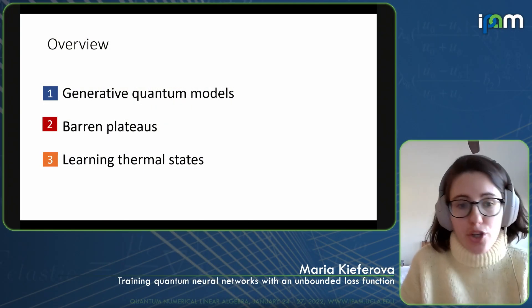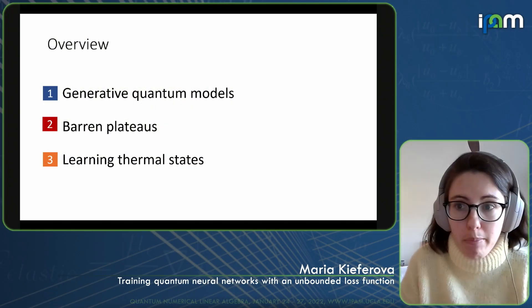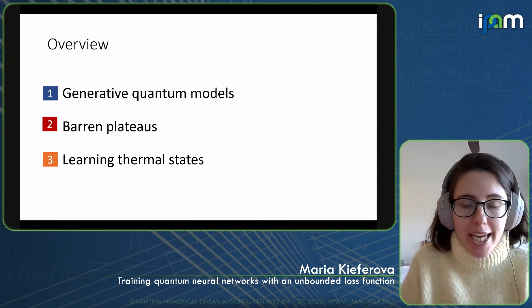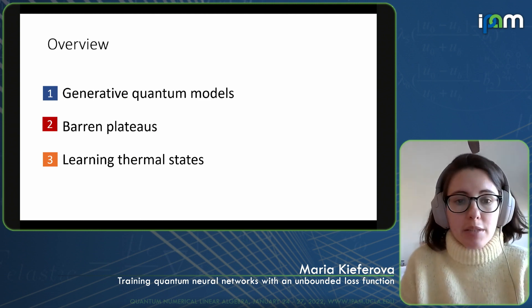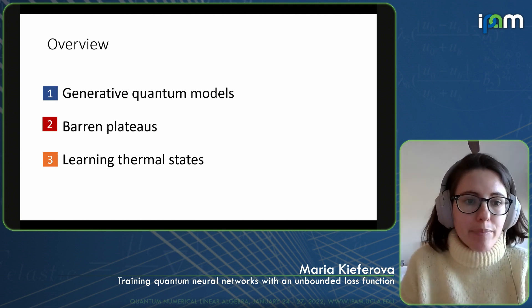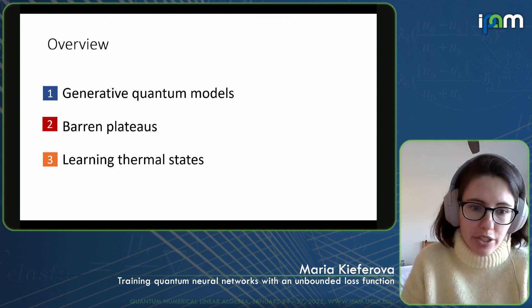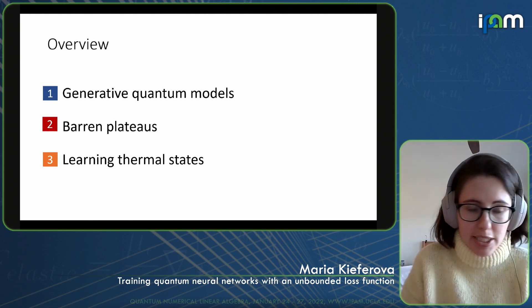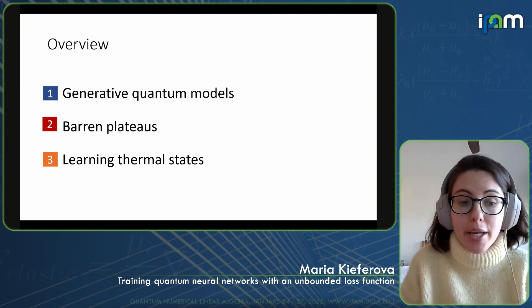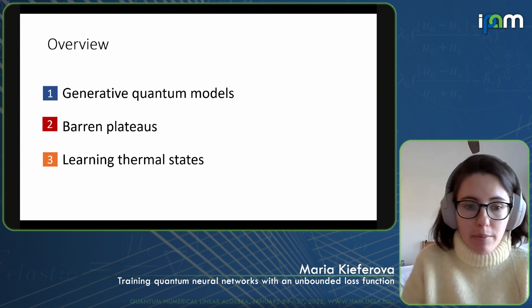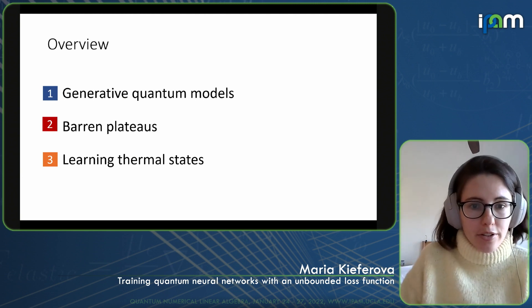I will talk about a type of unsupervised learning called generative quantum models. I will talk about the issue of barren plateaus — one of the main key problems that prevent trainability of variational circuits and quantum machine learning models. And towards the end, I will talk about the application of our algorithm on learning thermal states.